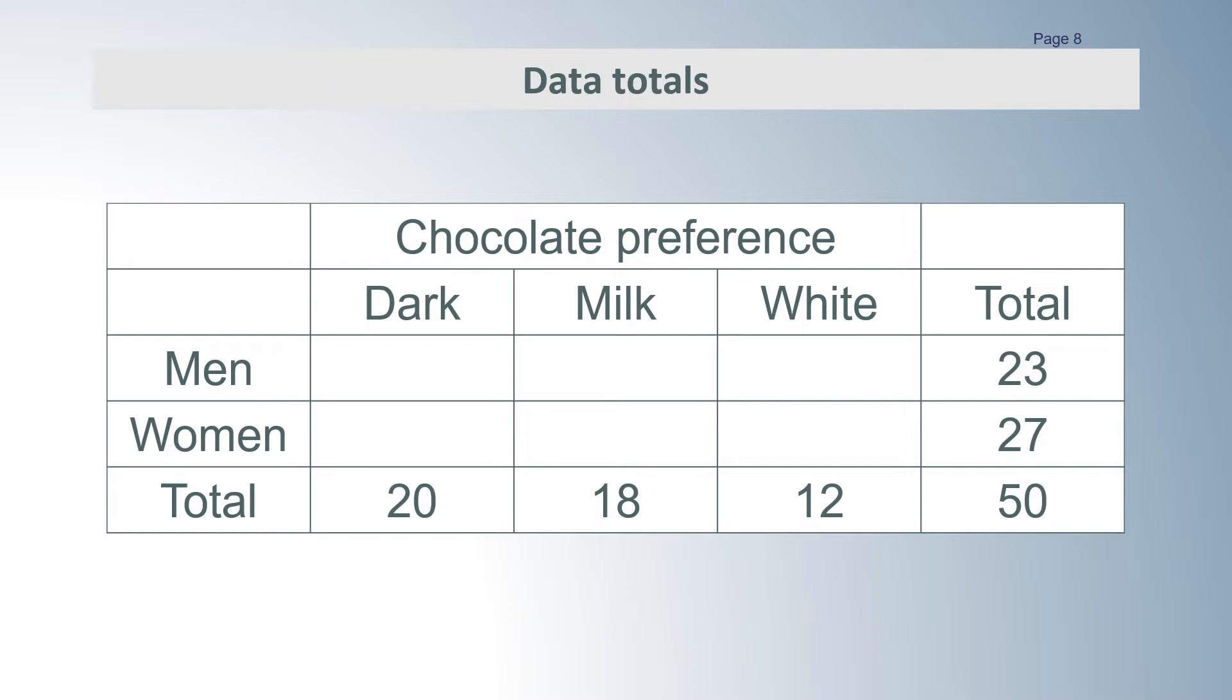We wish to find the values that would fill the middle of this table if the two variables were independent. We are finding out what the table would look like if the men and the women in the sample had the same preferences.